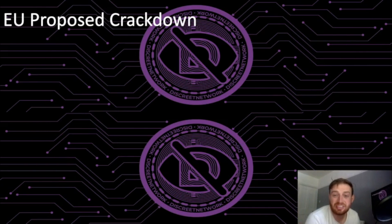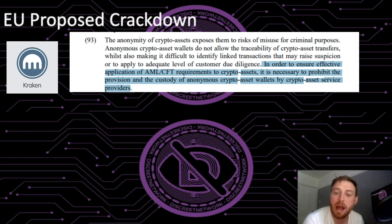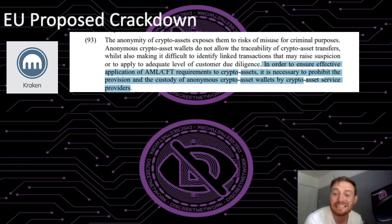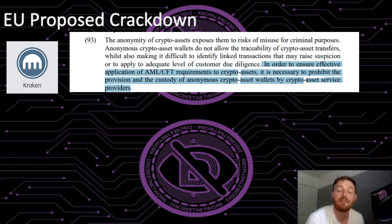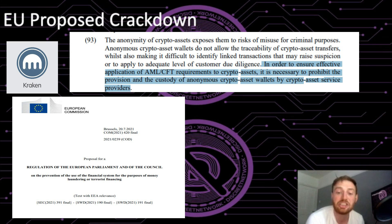Recently, the European Union started a crackdown on crypto asset providers — centralised exchanges — and released proposed legislation. The proposal declares that, in order to ensure effective application of AML requirements to crypto assets, it's necessary to prohibit the provision and custody of anonymous crypto asset wallets by crypto asset service providers — meaning centralised exchanges cannot provide services for anonymous crypto assets like Monero. Discreet, however, has its foot on both sides of the fence because it allows for both transparent and shielded transactions.